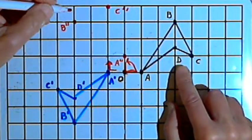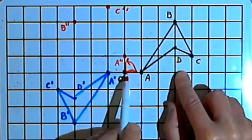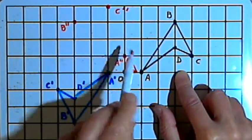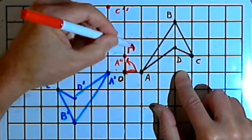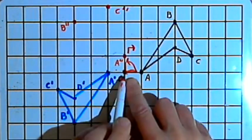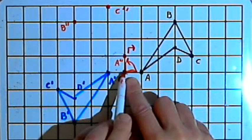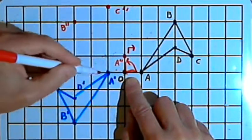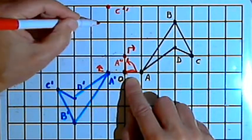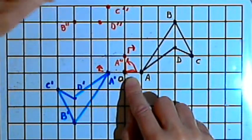To get to point D, I start at point O, go up 1.5 units, make a right turn, and go forward three units. So going back to that center of rotation, I turn 90 degrees counterclockwise, go 1.5 units, then make a right turn and go forward three units. That's going to be D double prime.